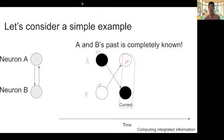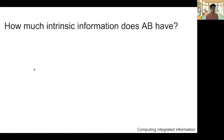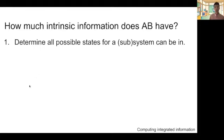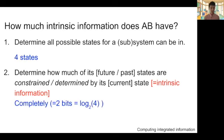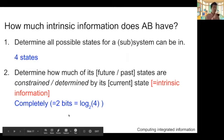So you can identify or define the past and future state based on the current state of the system. Now, how much intrinsic information does AB jointly have? IIT proposes: first, determine all possible states the system can be in — in our simple case, four states. Then determine how much its future or past state is determined by its current state — in our case, it was completely determined, so it's two bits. The state is completely determined, one bit plus one bit equals two bits, corresponding to the log of one state over four states.